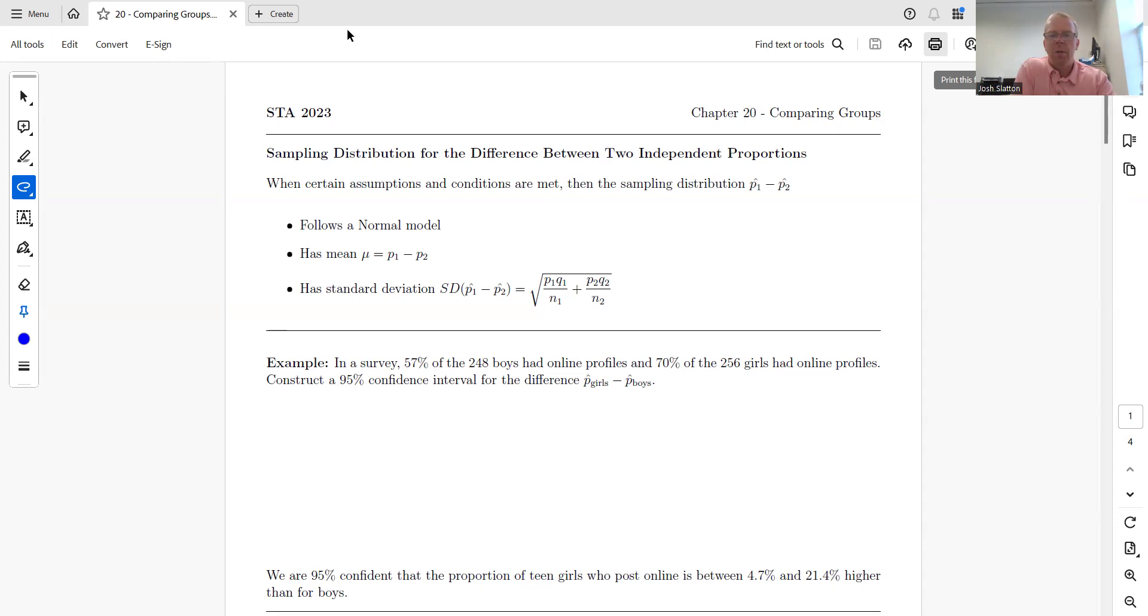Sampling distribution for the difference between two independent proportions. When we talk about proportions, we're talking about categorical variables. When certain assumptions and conditions are met, which we'll talk about, the sampling distribution p1 hat minus p2 hat follows a normal model.